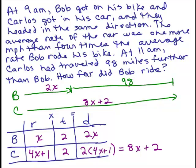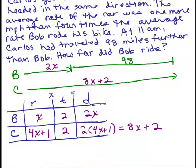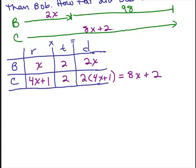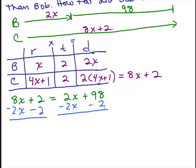We've got 2X plus 98 should be the same as 8X plus 2. I like to put the 8X plus 2 first, equals 2X plus 98. I'm going to subtract 2X from both sides and subtract 2 from both sides. So we have 6X equals 96, and then we divide both sides by 6. X is 16.